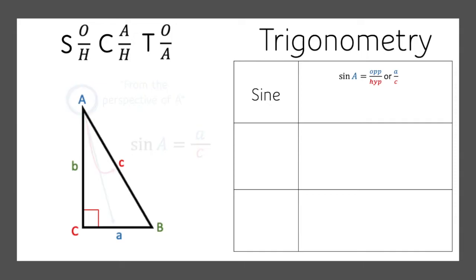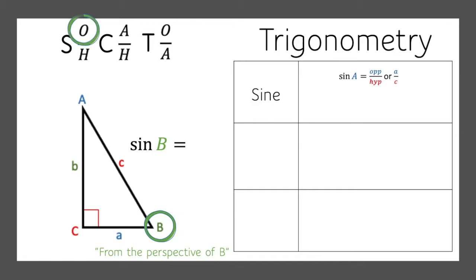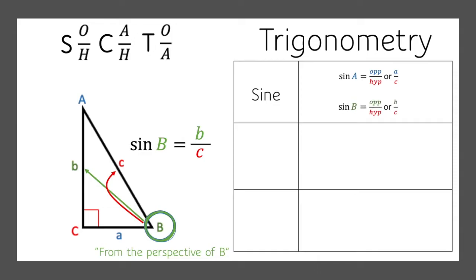What about the sine of B? The sine of B — again, you look from the perspective of B, look across to the opposite side, take the measure of that side, and divide it by the measure of the hypotenuse. That's the sine of B.